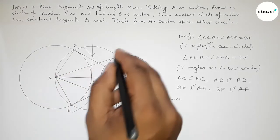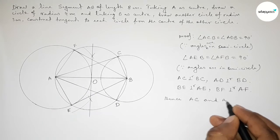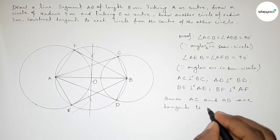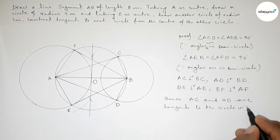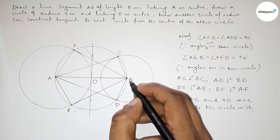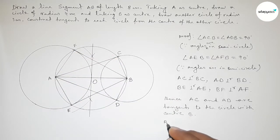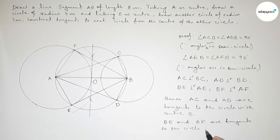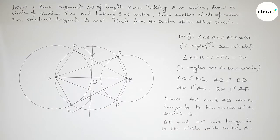Lines AC and AD are tangents from point A to the circle with center B. Similarly, lines BE and BF are two tangents from point B to the circle with center A. That's all — thanks for watching. If this video was helpful, please share it with your friends, and please like and comment.